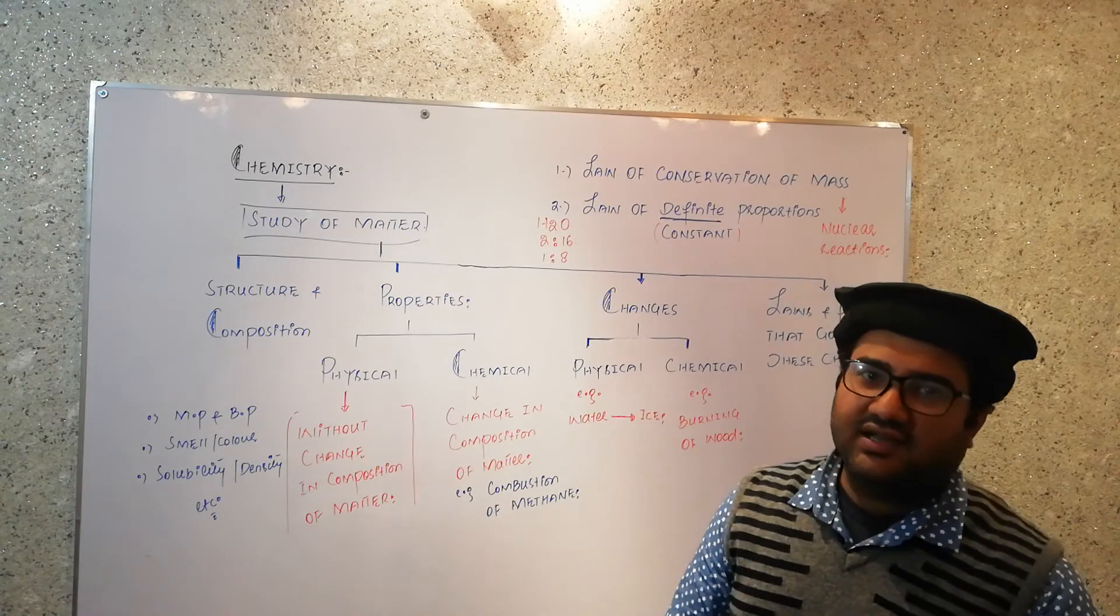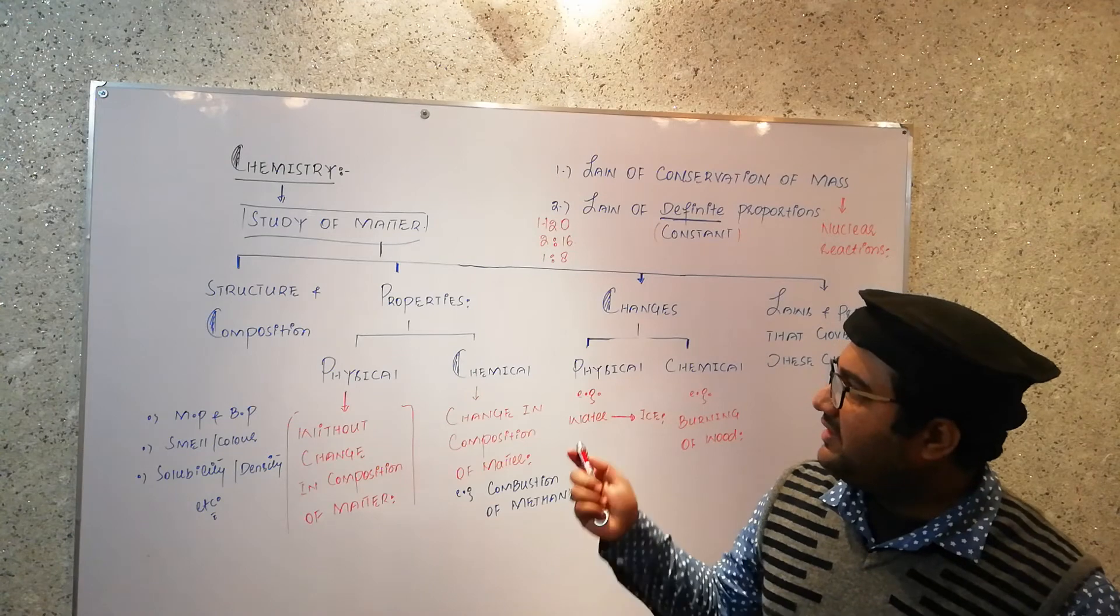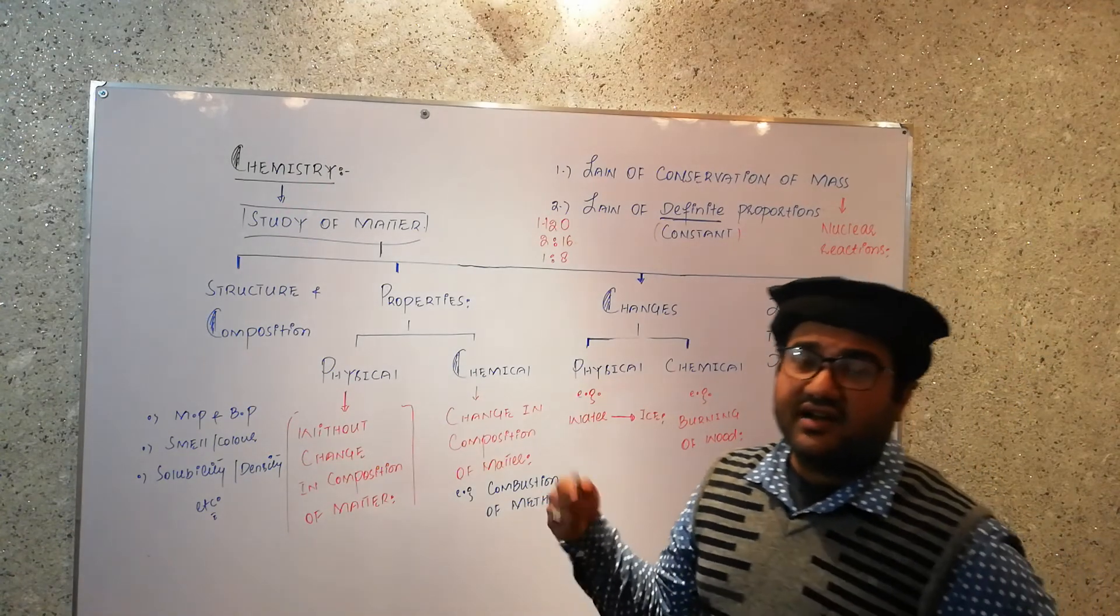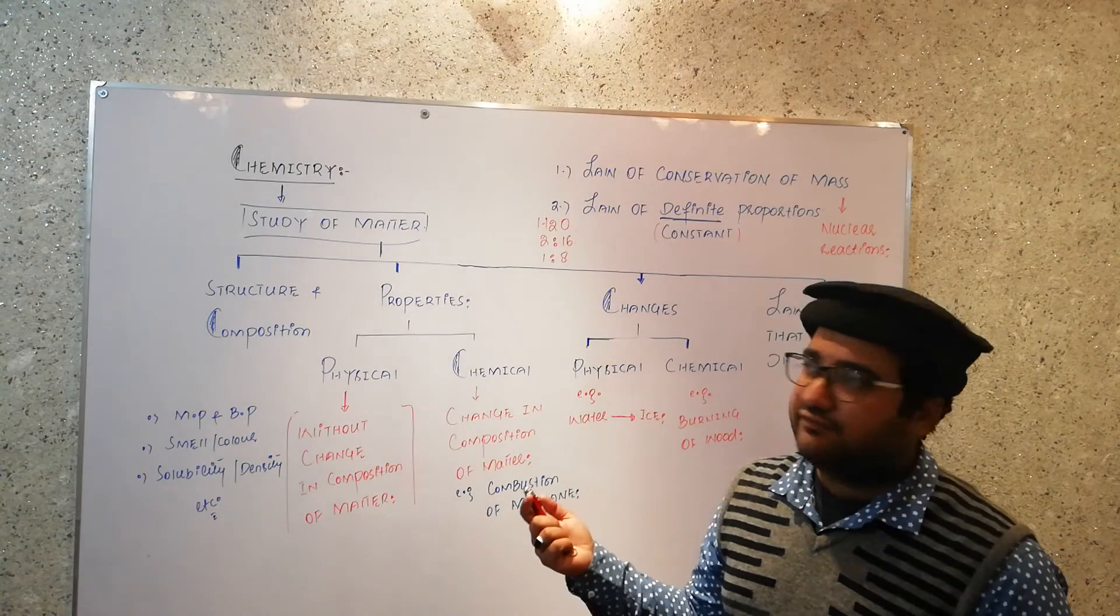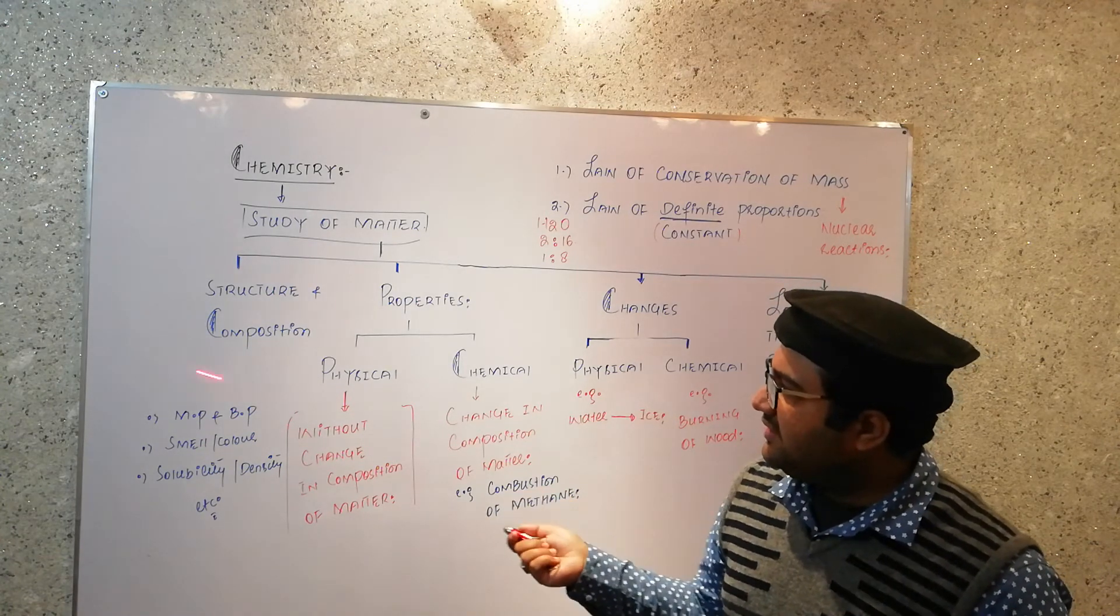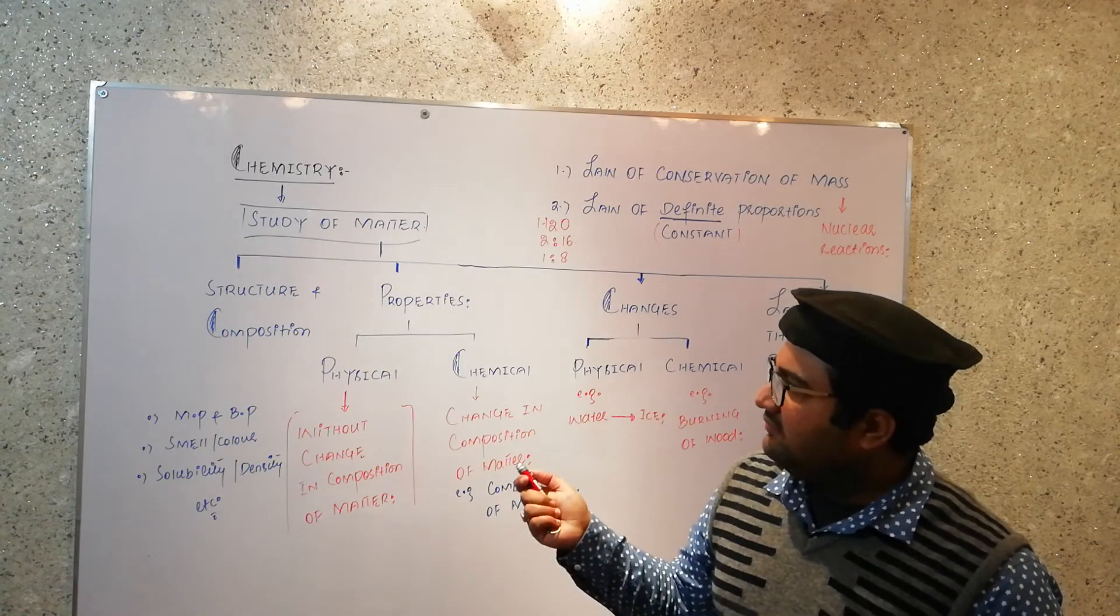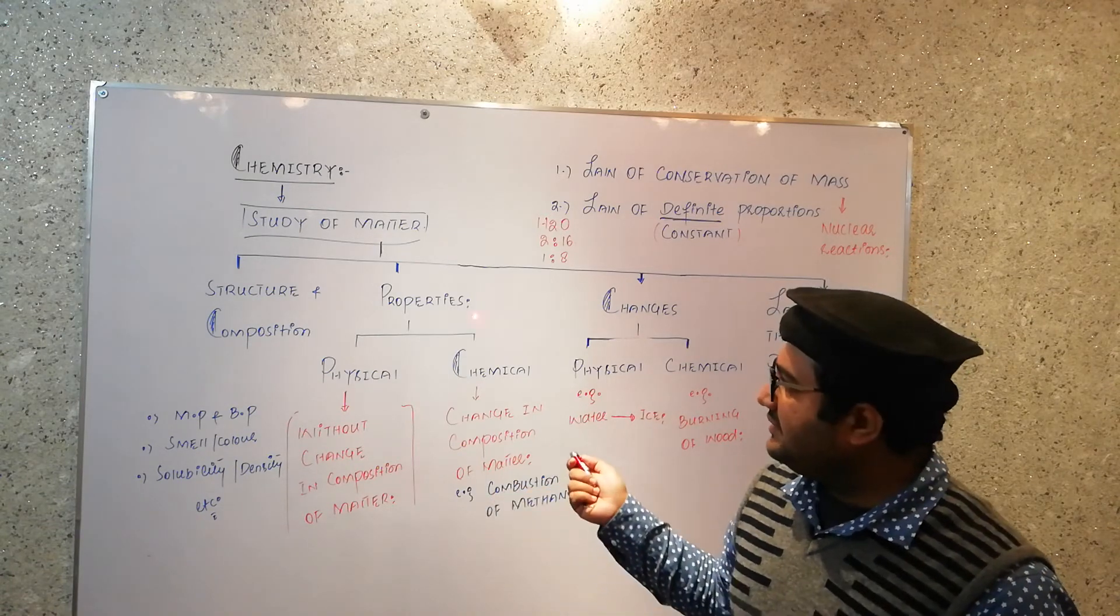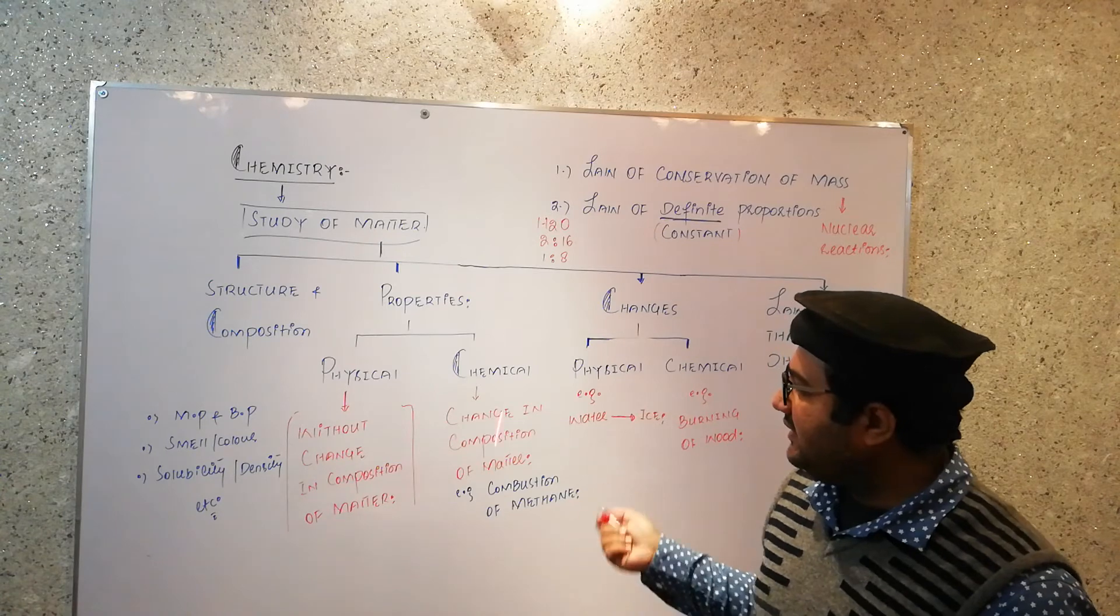So now we sum up the second lecture. What is chemistry? It is the study of matter. What kind of study of matter? And what features of matter are discussed? Structure and composition. What is the proportion of the particles? How the particles are arranged? Properties, both physical and chemical.